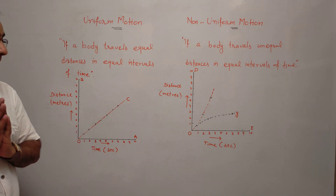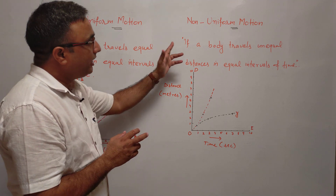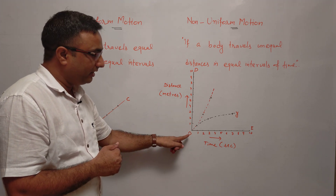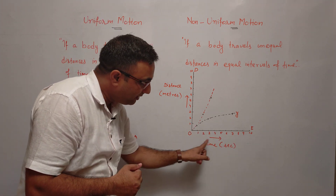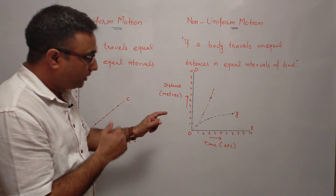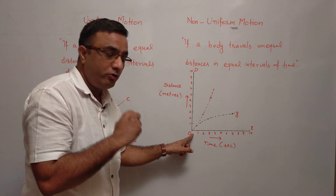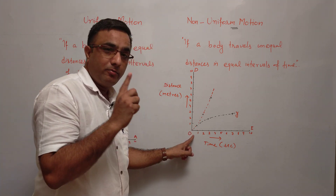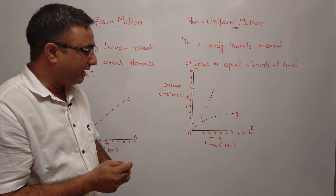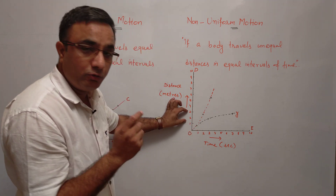यह straight line distance-time graph में uniform motion का example है। अब हम देखेंगे कि non-uniform motion क्या है। If a body travels unequal distances in equal intervals of time — जैसे इस graph में आप देखते हैं, O to E time in seconds और O to D distance in meters। यह red line curve non-uniform motion को show कर रहा है। Zero to one second में body ने one meter distance travel की। दूसरे second में एक से दो second के बीच में जो distance travel हुई वो 2 meters हुई।